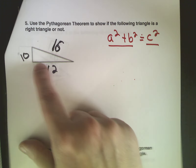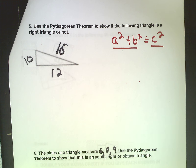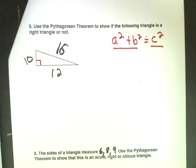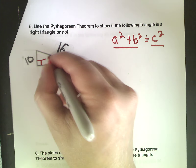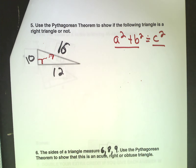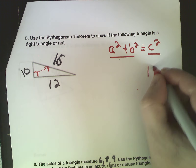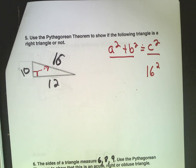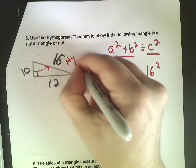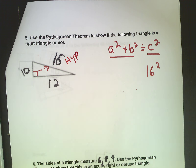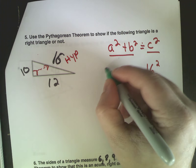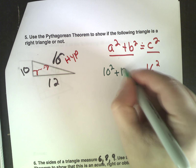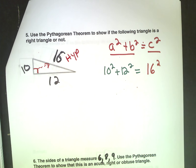Alright, let's move on. Now problems 5 and 6. This one says: use the Pythagorean theorem to show if the following triangle is a right triangle or not. This one we have to look at a little differently. Pythagorean theorem — a squared plus b squared equals c squared — only works for right triangles. It doesn't work for any other type of triangle. So if this side equals this side, it's a right triangle. But if it doesn't, then it's not a right triangle.